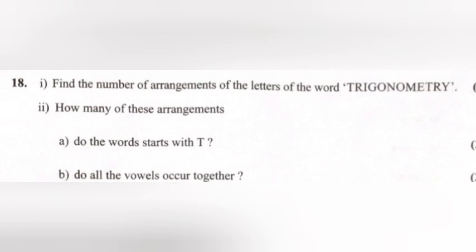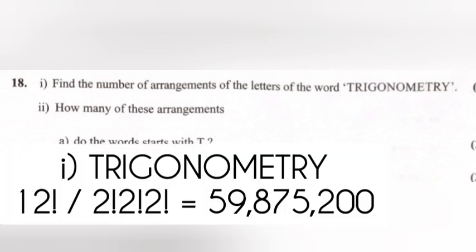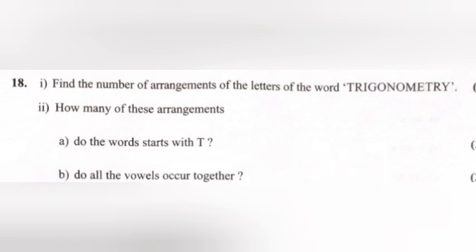Problem 18, Question 1. Find the number of arrangements of the letters of the word TRIGONOMETRY. Answer: 12! divided by (2! × 2! × 2!) equal 59,875,200.